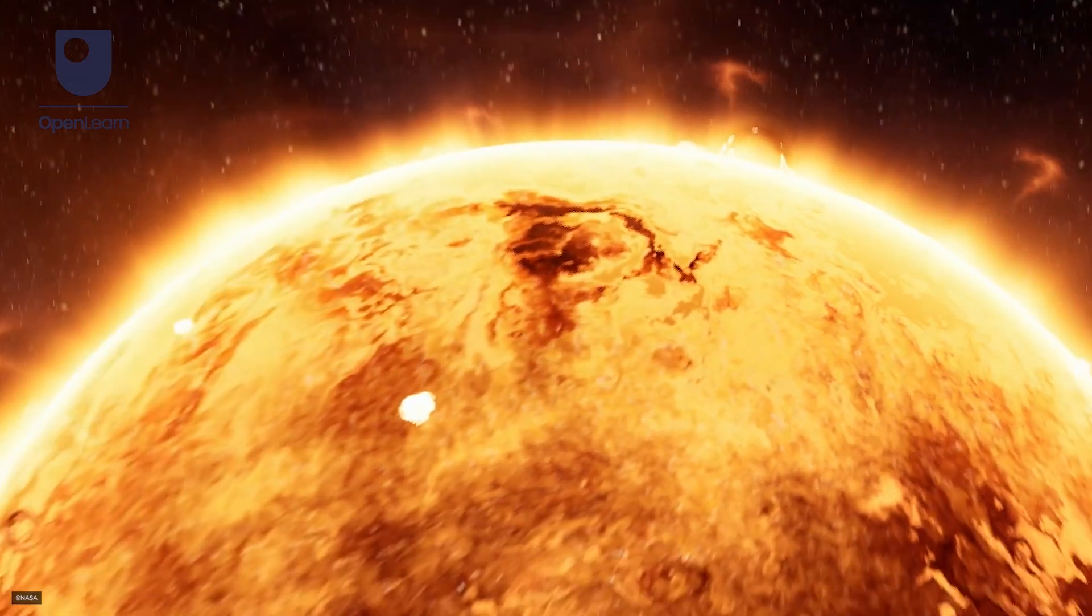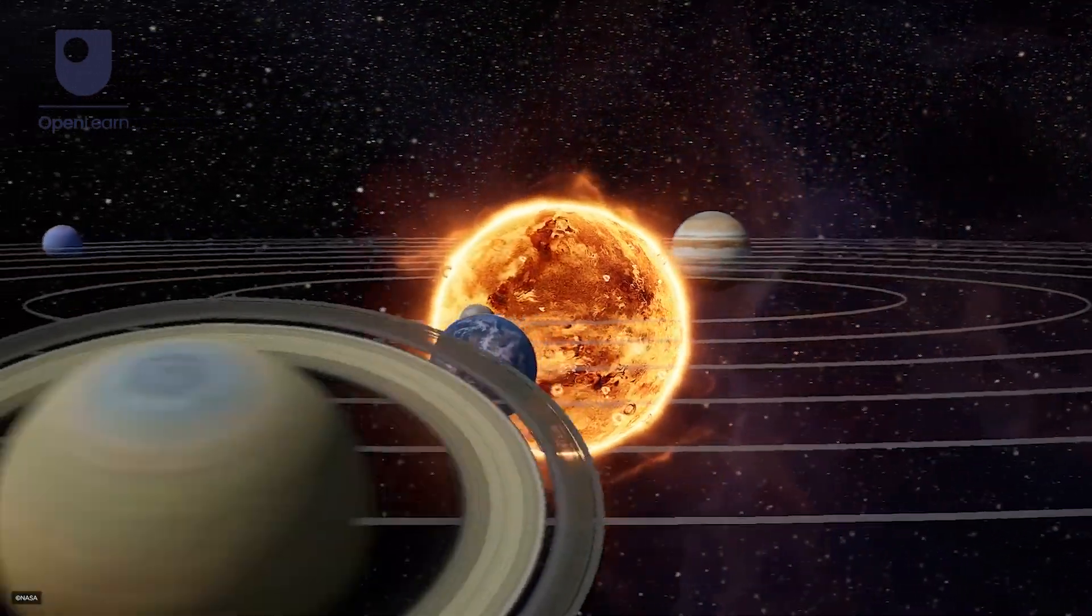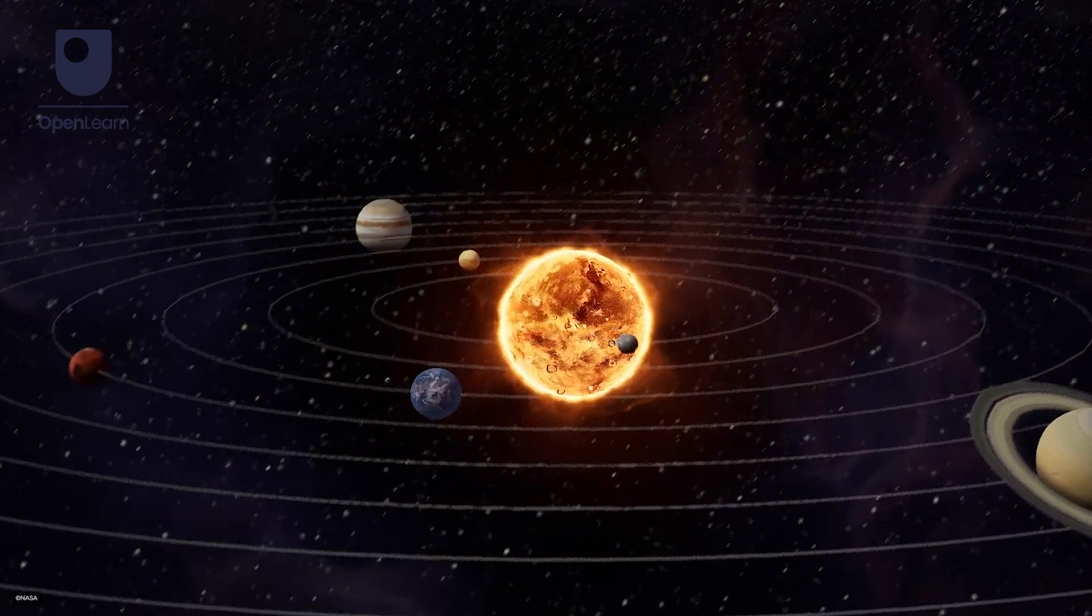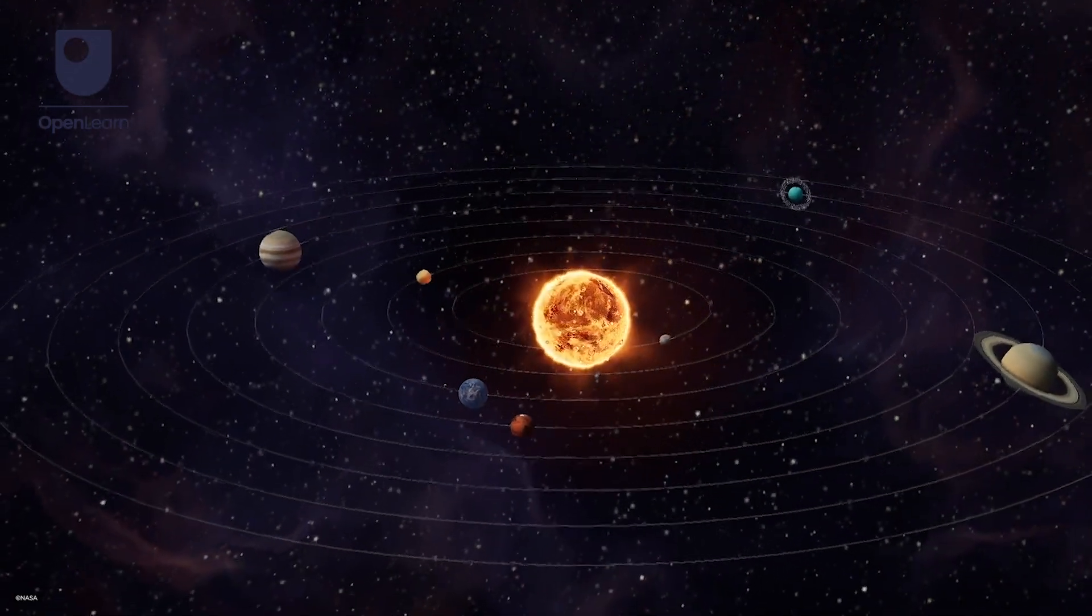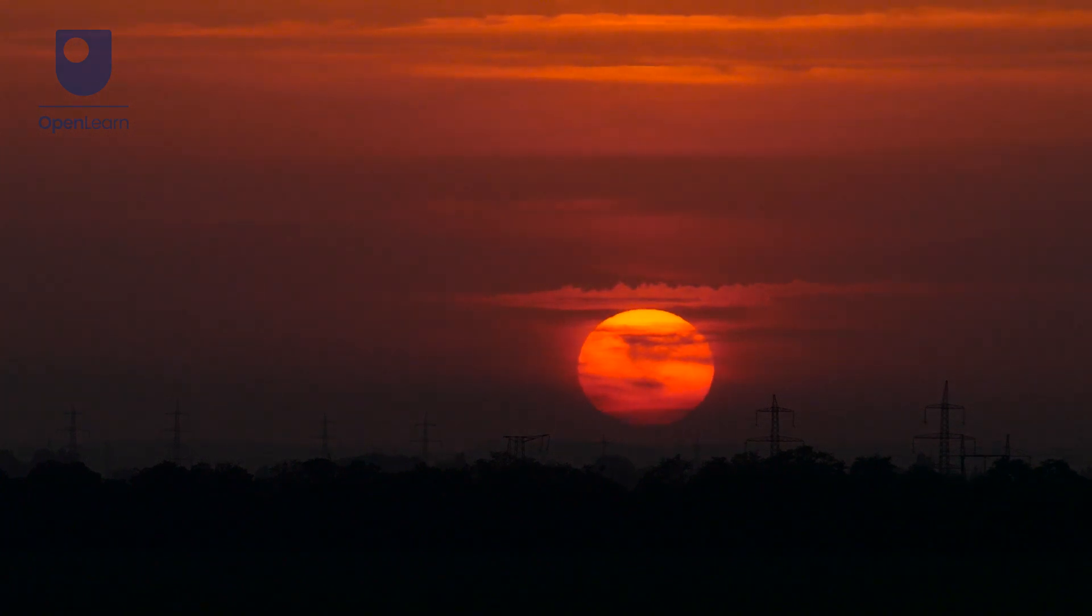That energy pushed back against gravity and the Sun settled down into a balanced state, radiating out light into space. As you can see if you look up in the sky, this is the reason that the Sun shines and has been the situation for the last four billion years.